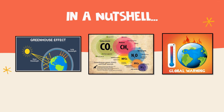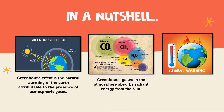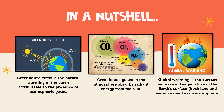To sum up everything we have learned today, here are the key notes to remember. First, the greenhouse effect is the natural warming of the Earth attributable to the presence of atmospheric gases, called the greenhouse gases. Greenhouse gases in the atmosphere absorb radiant energy from the sun. But too much concentration of greenhouse gases in the atmosphere results in global warming. Global warming is the current increase in temperature of the Earth's surface, both land and water, as well as its atmosphere. Human activities have played a crucial role in the increasing global temperature over the years.